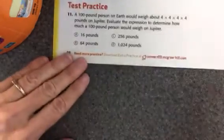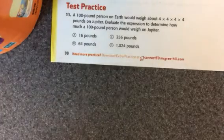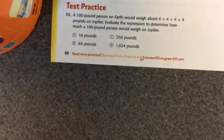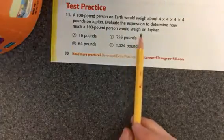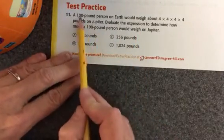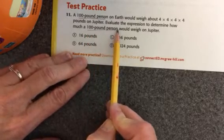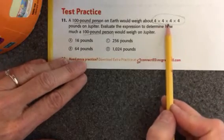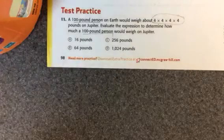Let's look at test practice. A 100 pound person on Earth would weigh about 4 times 4 times 4 pounds on Jupiter. Evaluate the expression to determine how much a 100 pound person would weigh on Jupiter. So we're talking about a 100 pound person here. We're still talking about a 100 pound person here. So you're going to figure out the answer to this and then you'll know and then choose the correct one here.